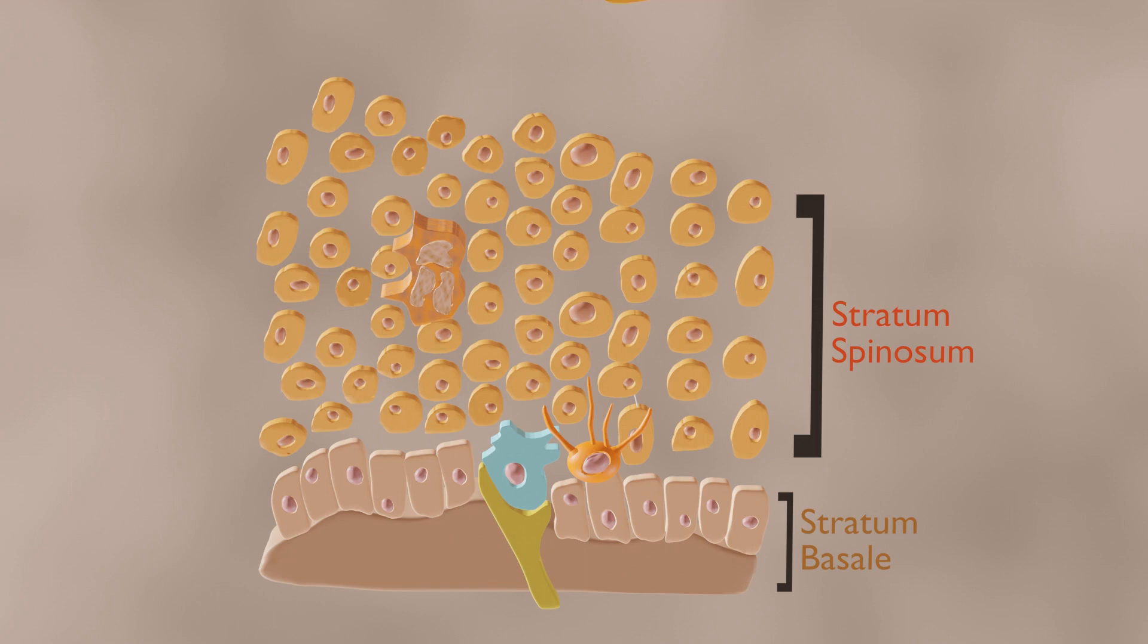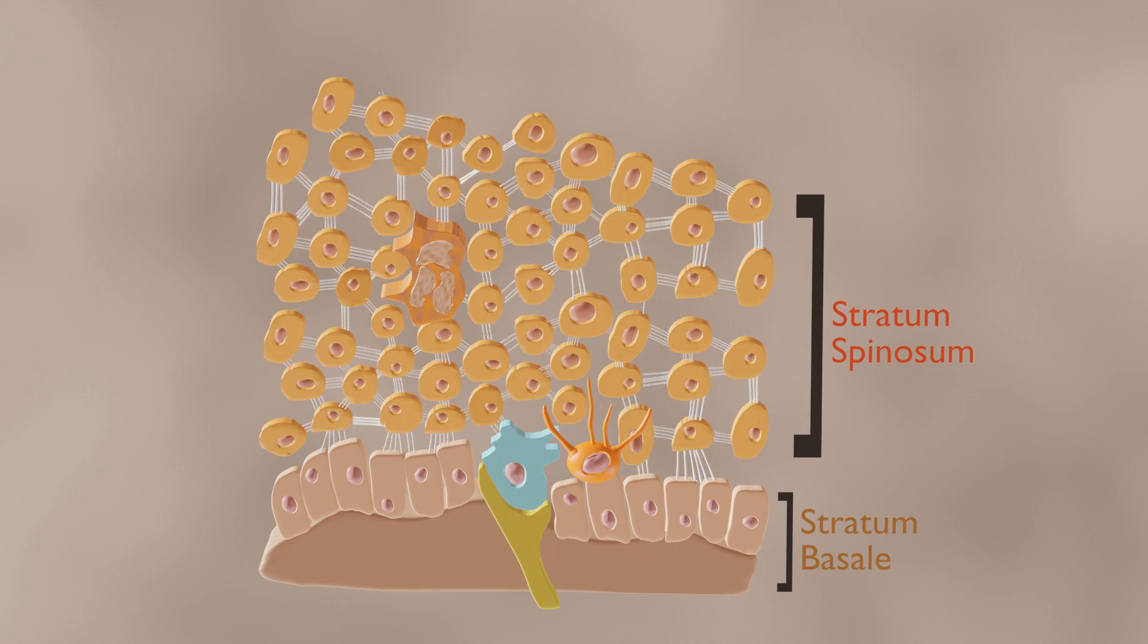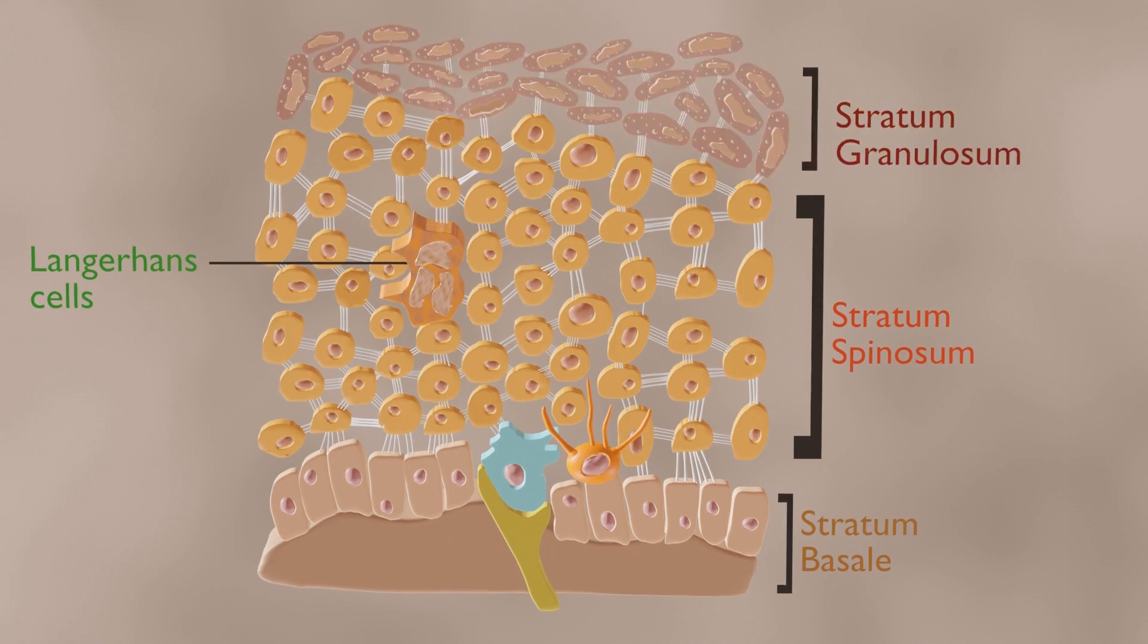Stratum spinosum has 8-10 cell layers, also known as the prickle cell layer. It contains irregular polyhedral cells with cytoplasmic processes, sometimes called spines, that extend outward and contact neighboring cells by desmosomes. The squamous cell layer also contains cells called Langerhans cells. These cells attach themselves to antigens that invade damaged skin and alert the immune system to their presence.